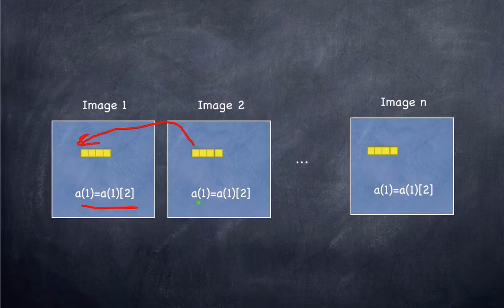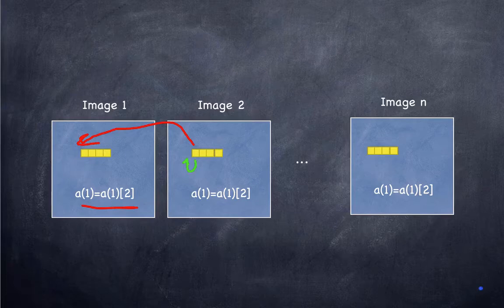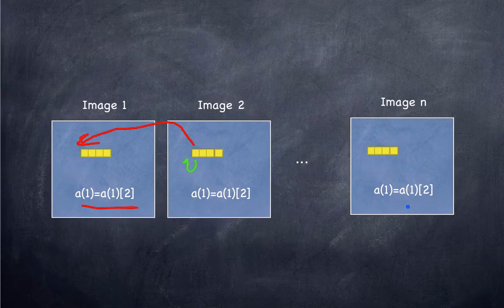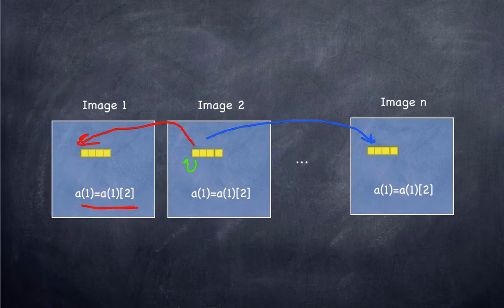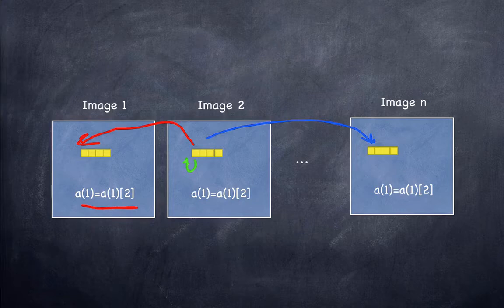When image 2 executes the same line it's copying data onto itself which the compiler might optimize away or which you might just get rid of with a conditional statement. When the nth image executes the same line it's copying that same element to element 1 on that image. Notice that I don't show square braces on the left-hand side because they can be implicit. When you don't show square braces you're only working on the local data.